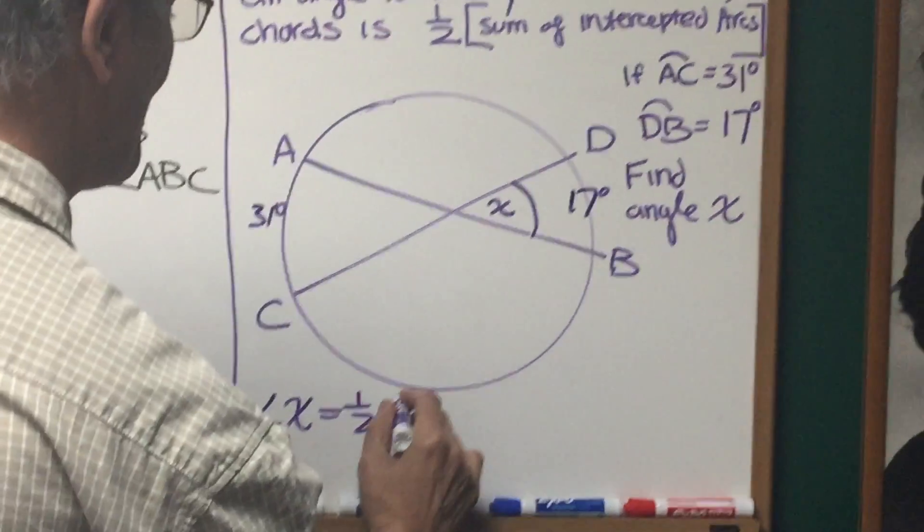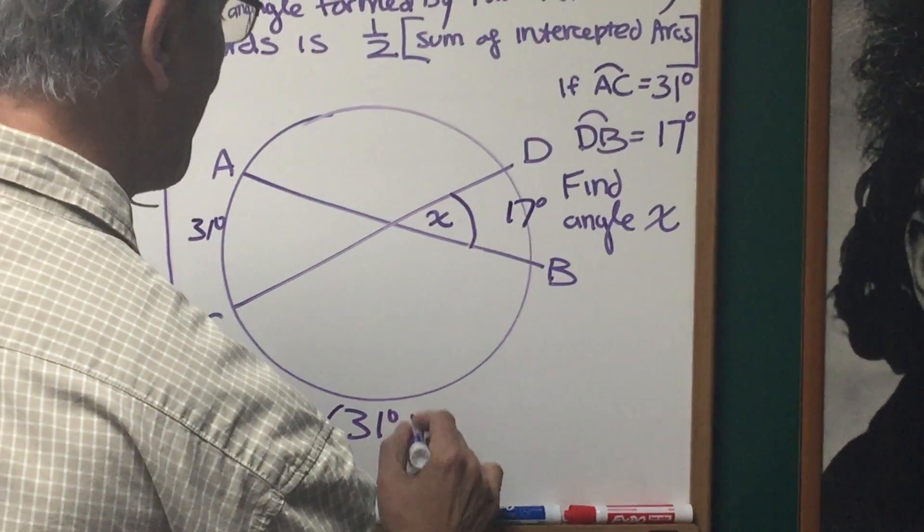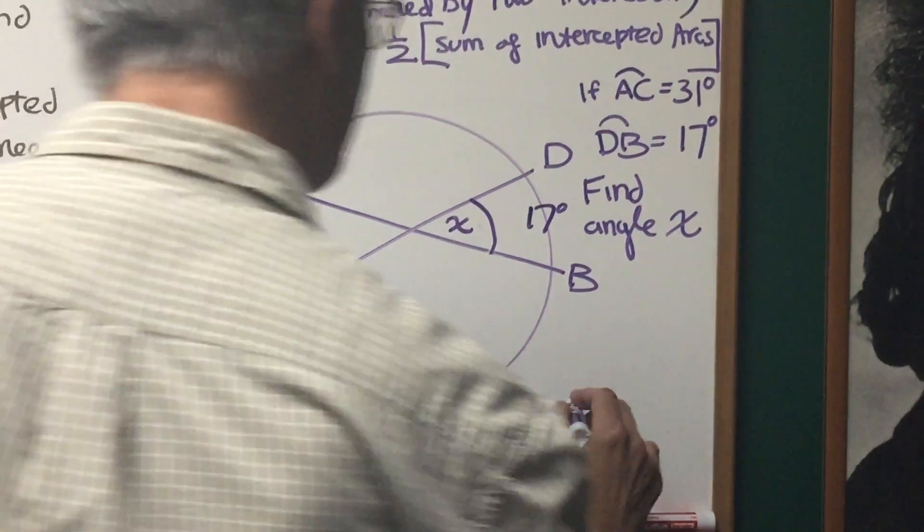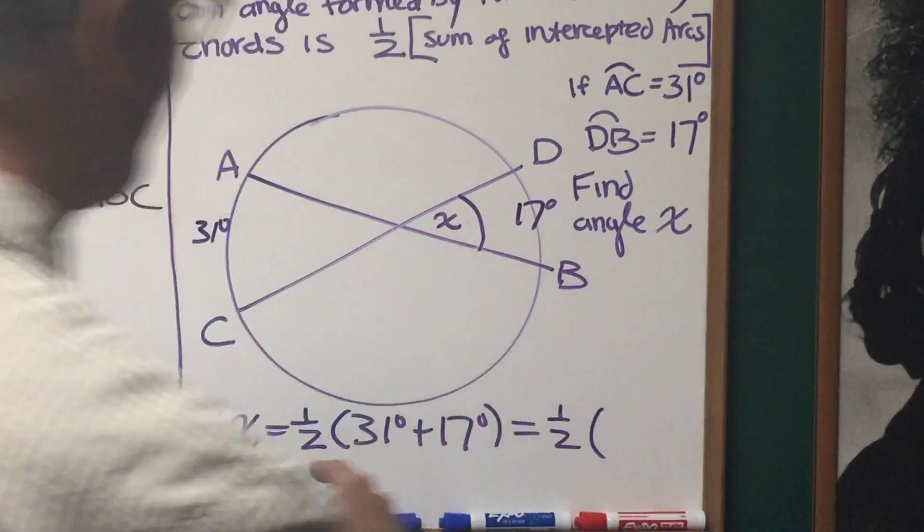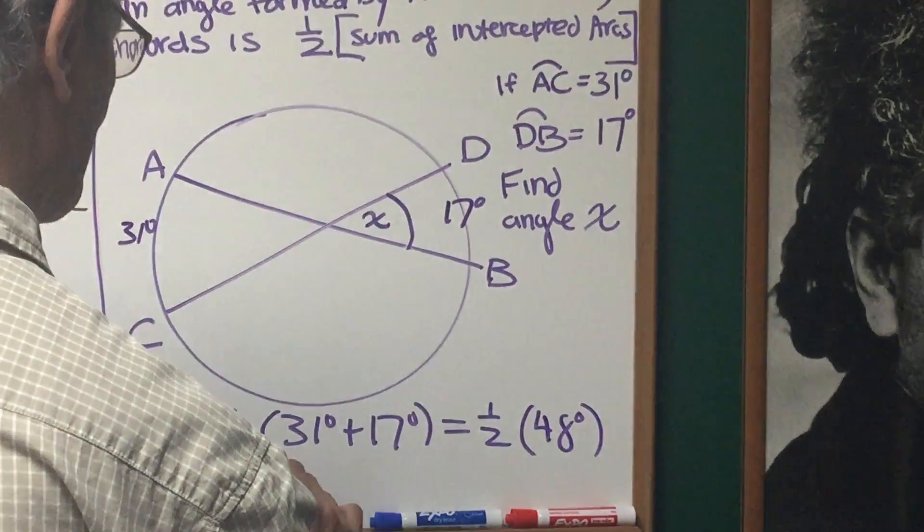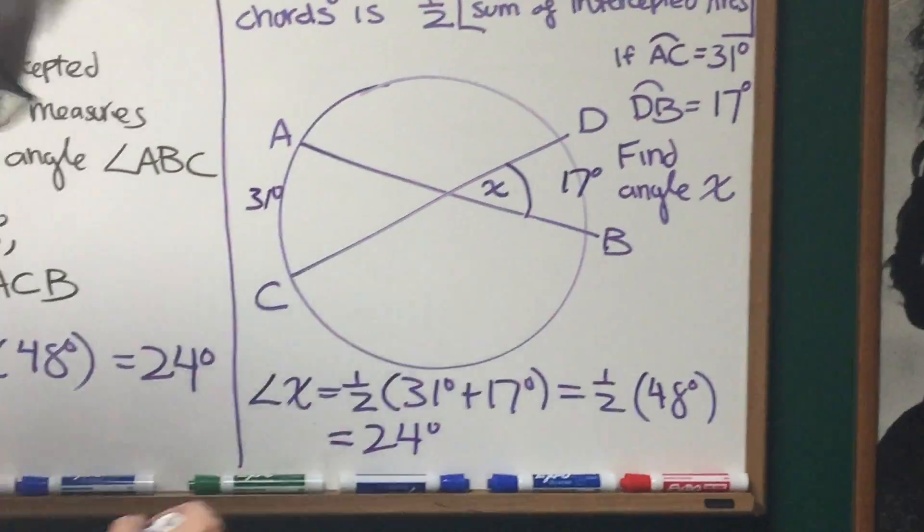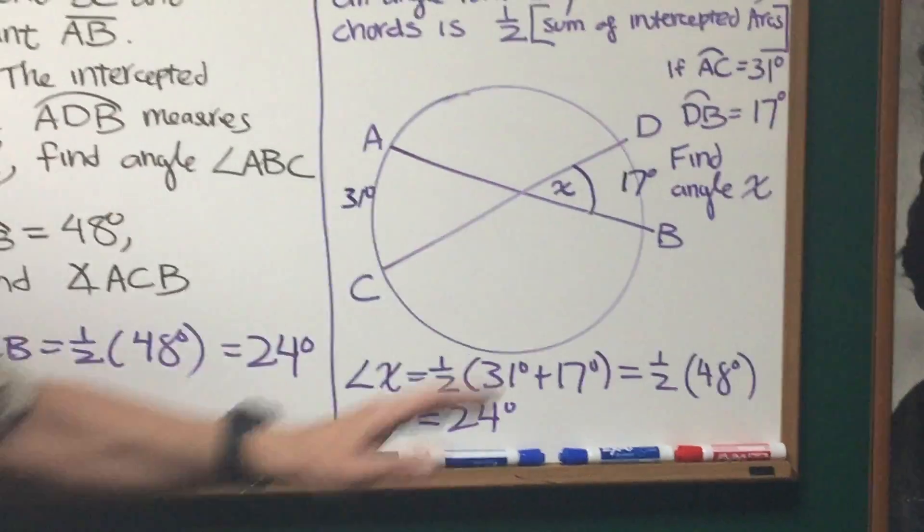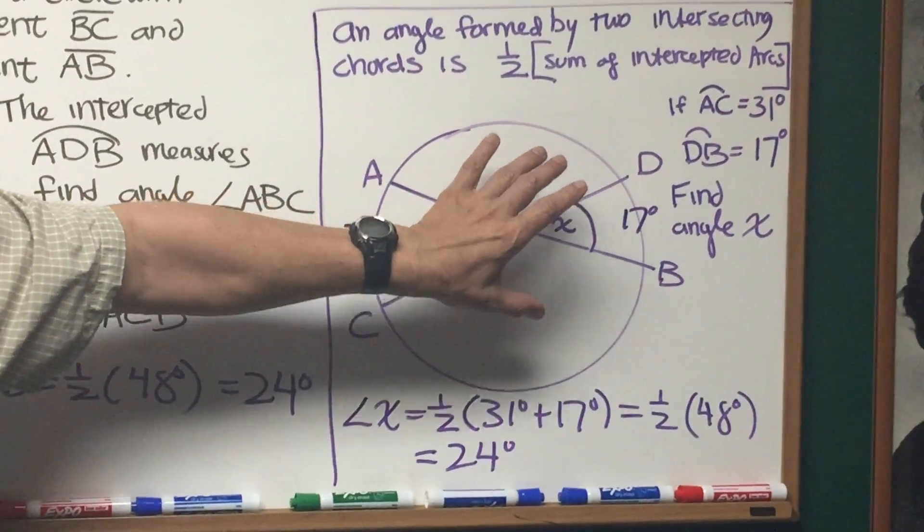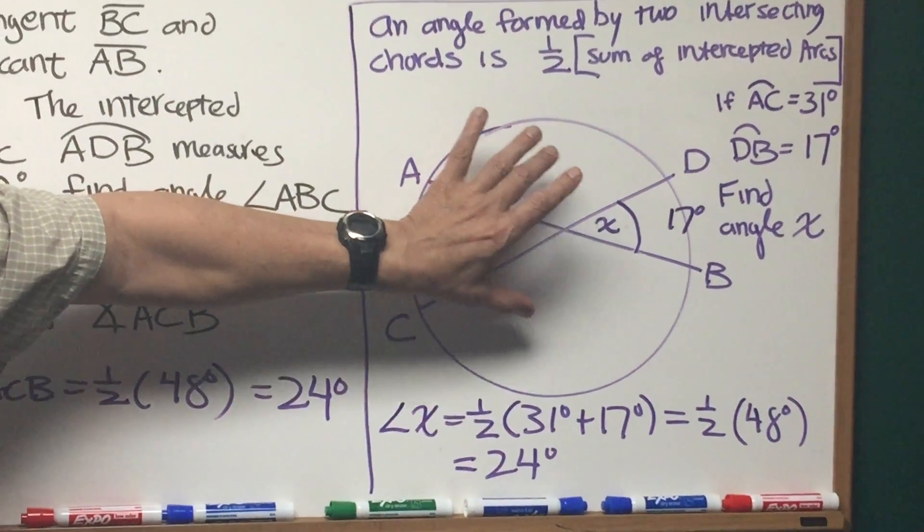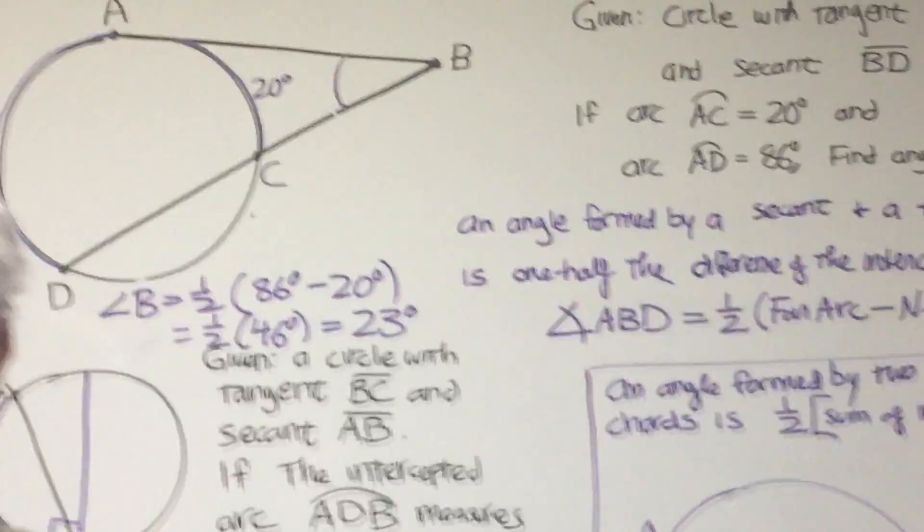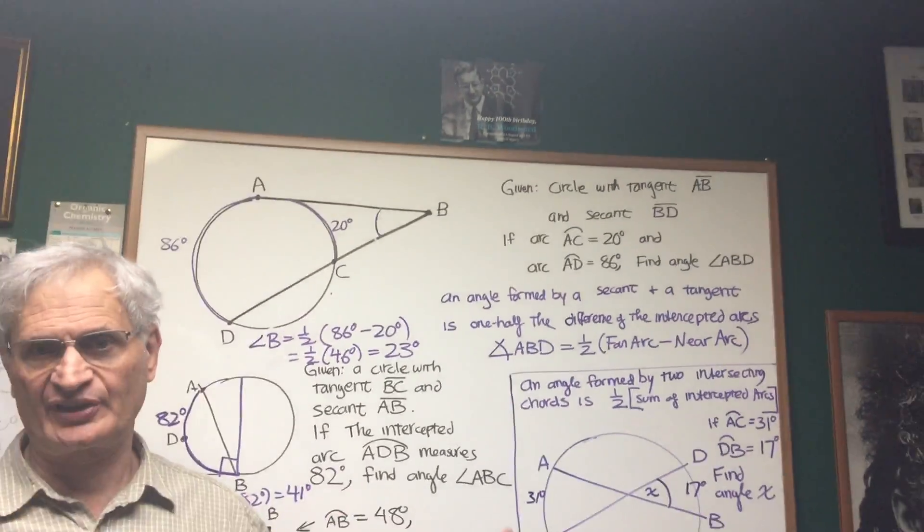Angle X is going to now it's going to be one half the sum of the intersected arcs. 31 plus 17, one half of that is equal to one half 48 degrees and that's going to be equal to 24 degrees. So it makes a difference as to whether the intercepted arcs are measured are produced from an internal set of chords or from external secants and tangents and that's the difference between the two in this set of examples.